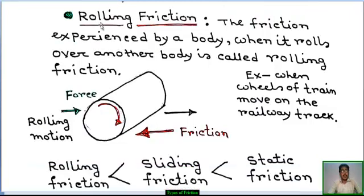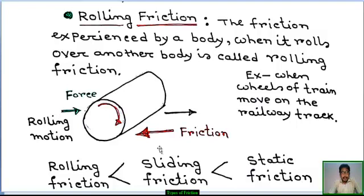What is rolling friction? The friction experienced by a body when it rolls over another body is called rolling friction. Example: when wheels of a train move on the railway track. This is a roller. Force is applied in this direction, frictional force occurs in the opposite direction, and the roller rolls in this direction — this is rolling motion.